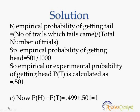Now the second question. The empirical probability of getting tail is equal to number of trials where tail came divided by total number of trials. So empirical probability of getting tail is equal to 501 divided by 1000, which gives an empirical or experimental probability of getting tail as 0.501.